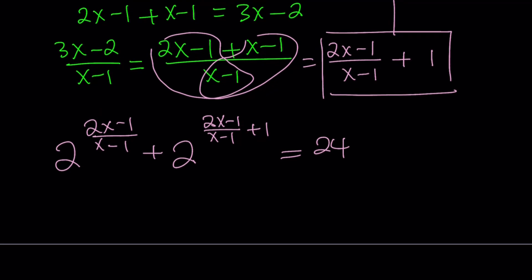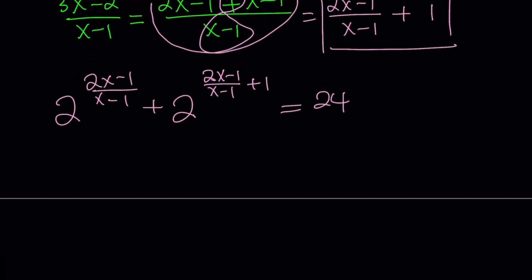Notice that we have 2x minus 1 over x minus 1 twice. Let's go ahead and use the rules of exponents. The exponents are being added, which means we can turn this into a multiplication problem. So we can write this as 2 to the power of 2x minus 1 over x minus 1 plus 2 to the power of 2x minus 1 over x minus 1 times 2, and that equals 24.